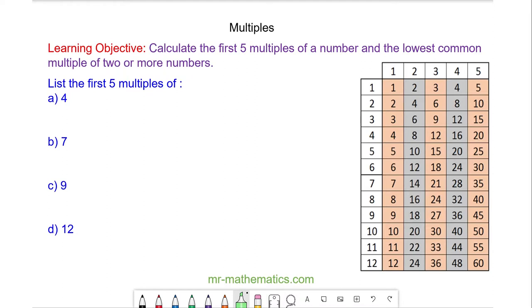Hello and welcome to our lesson on multiples. We're going to calculate the first few multiples of a number. The first multiple of 4 is 1 times 4, which you can see here, 1 times 4 is 4.